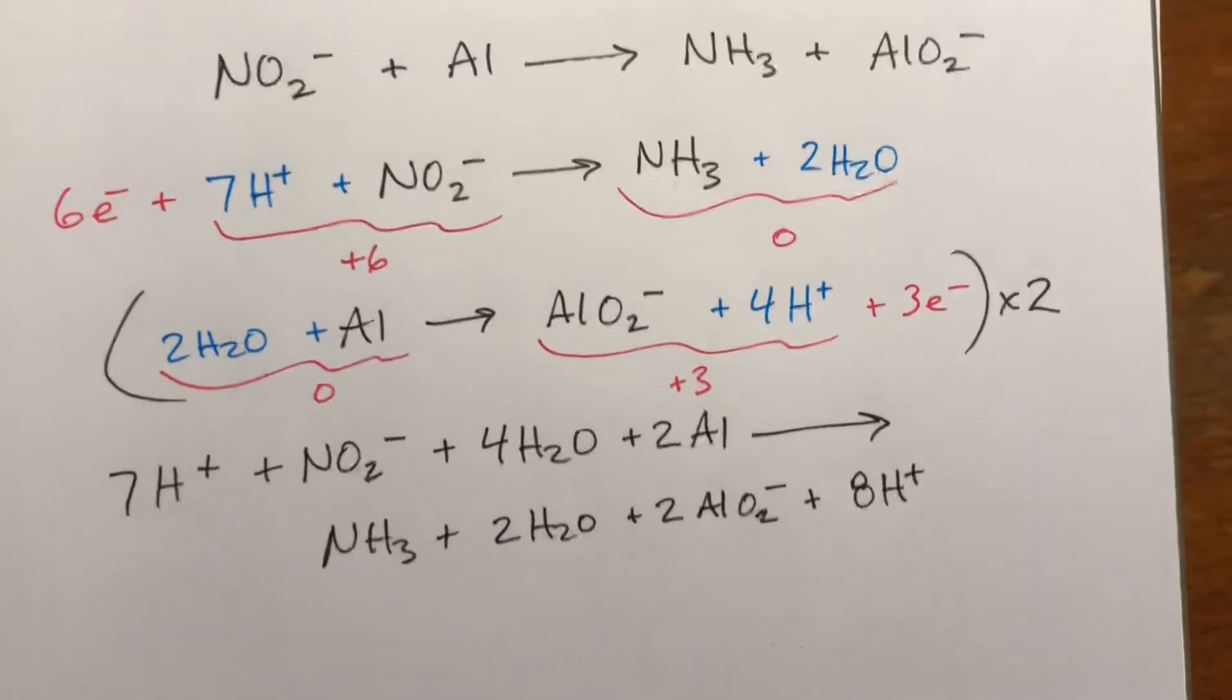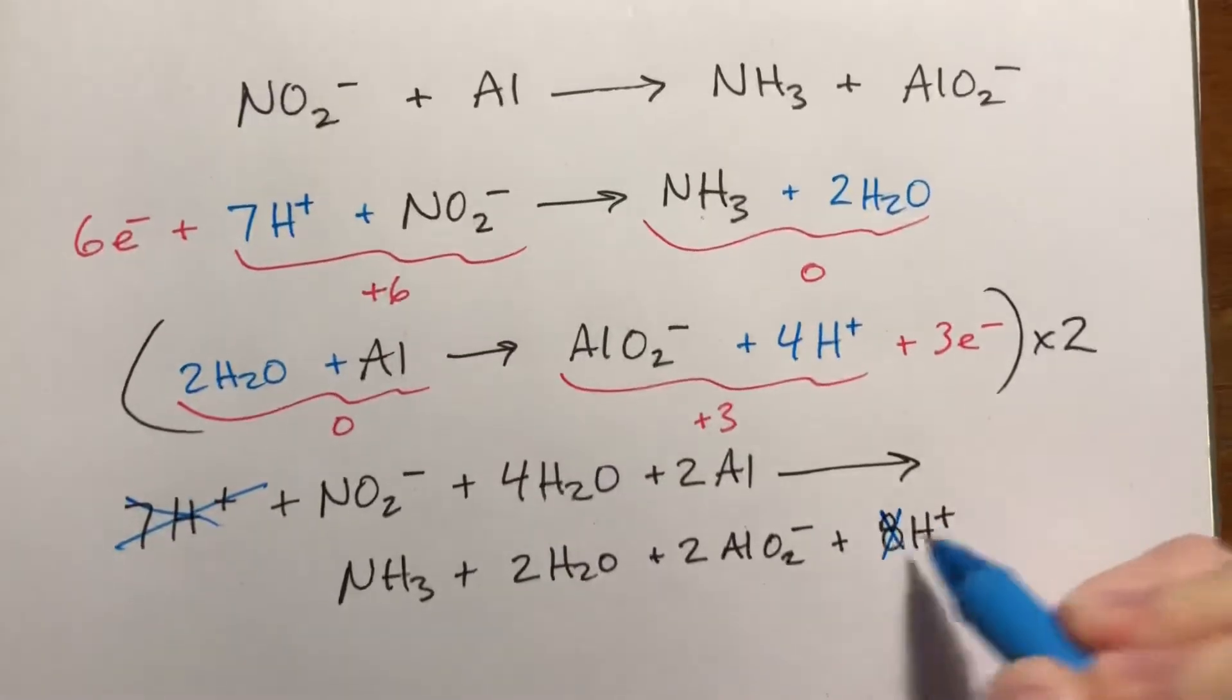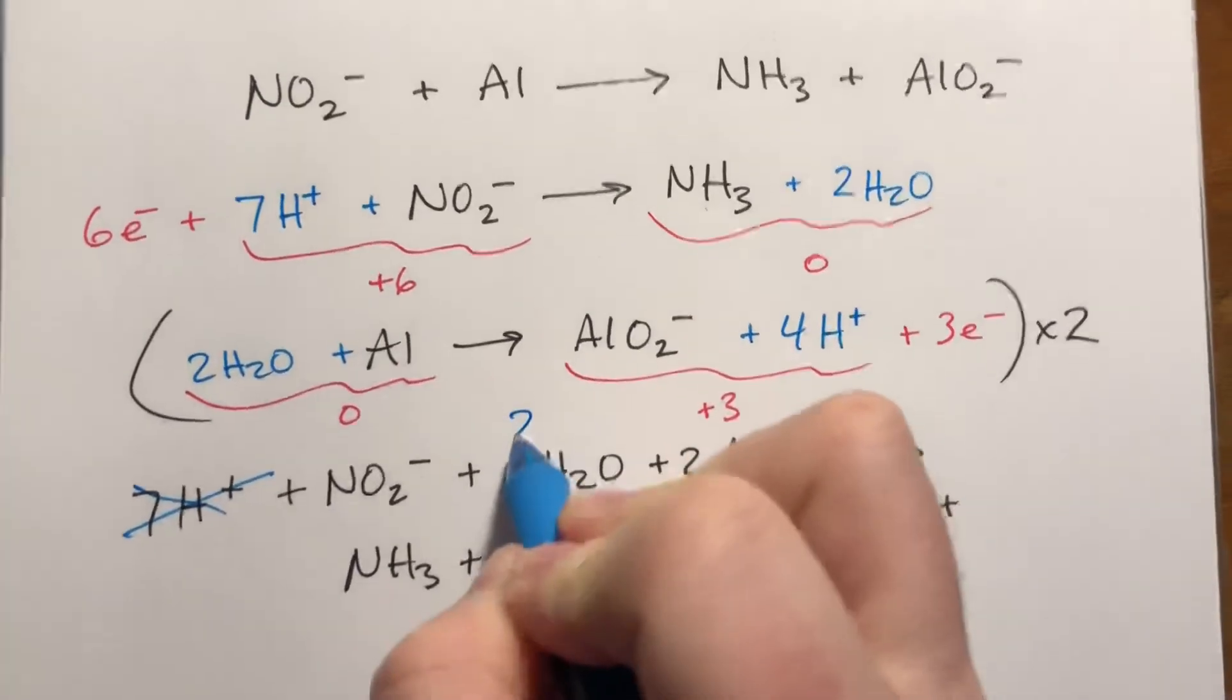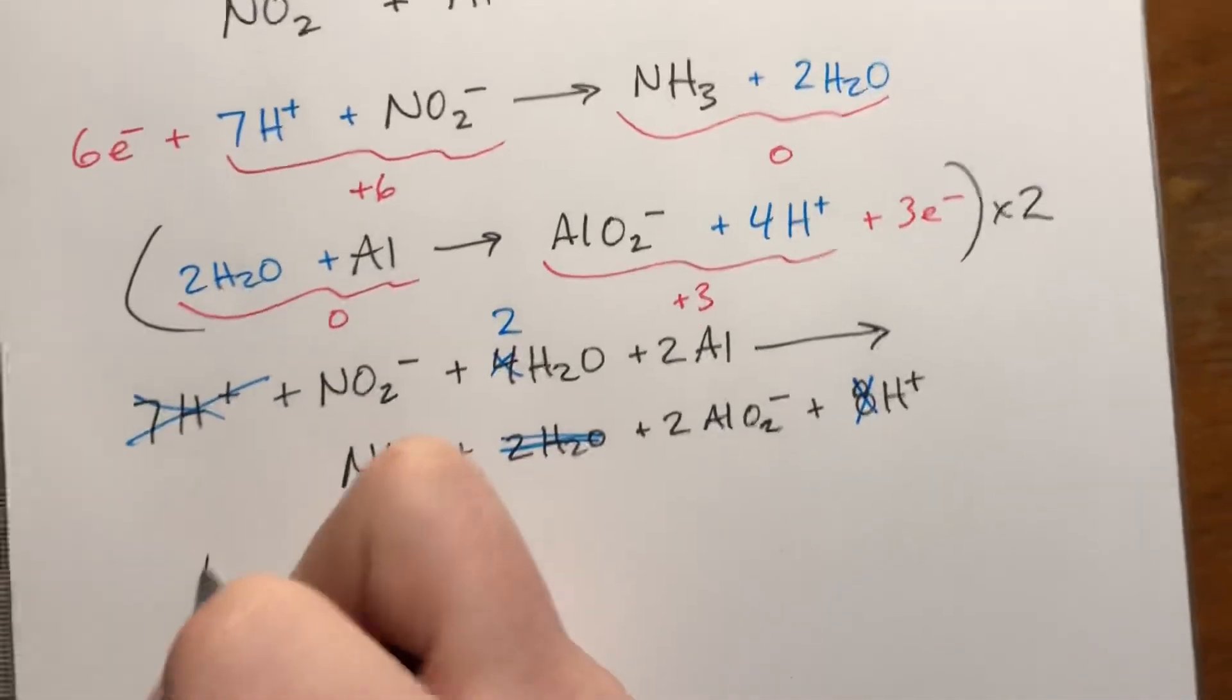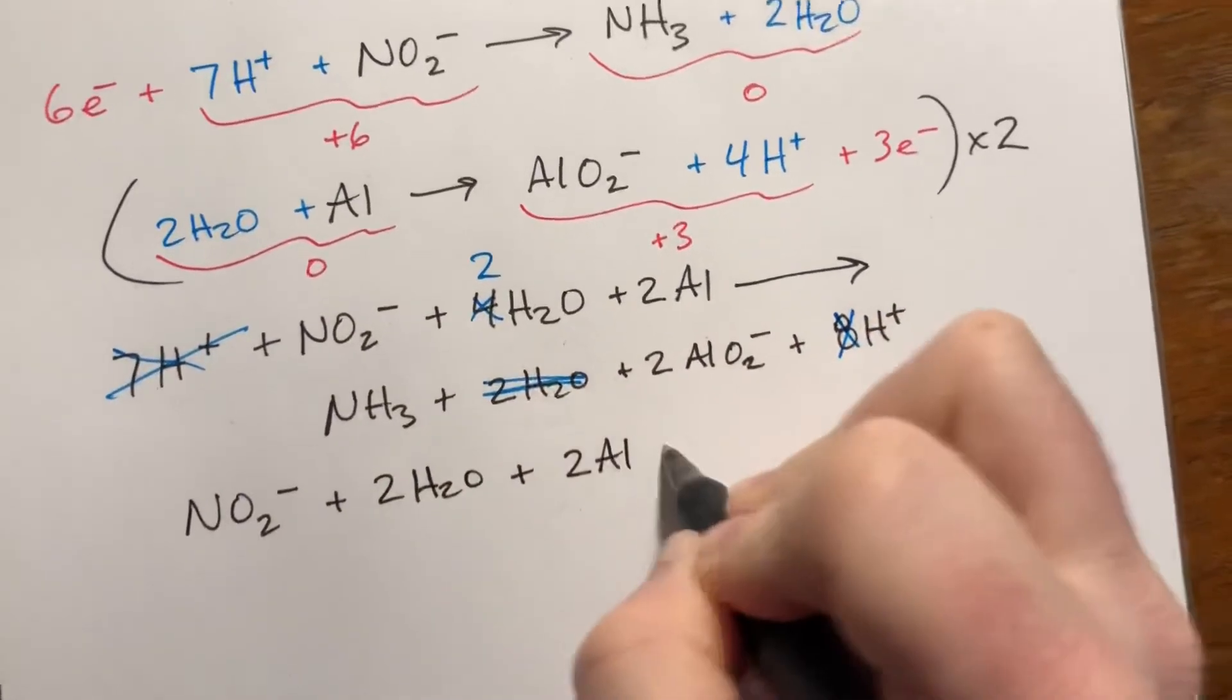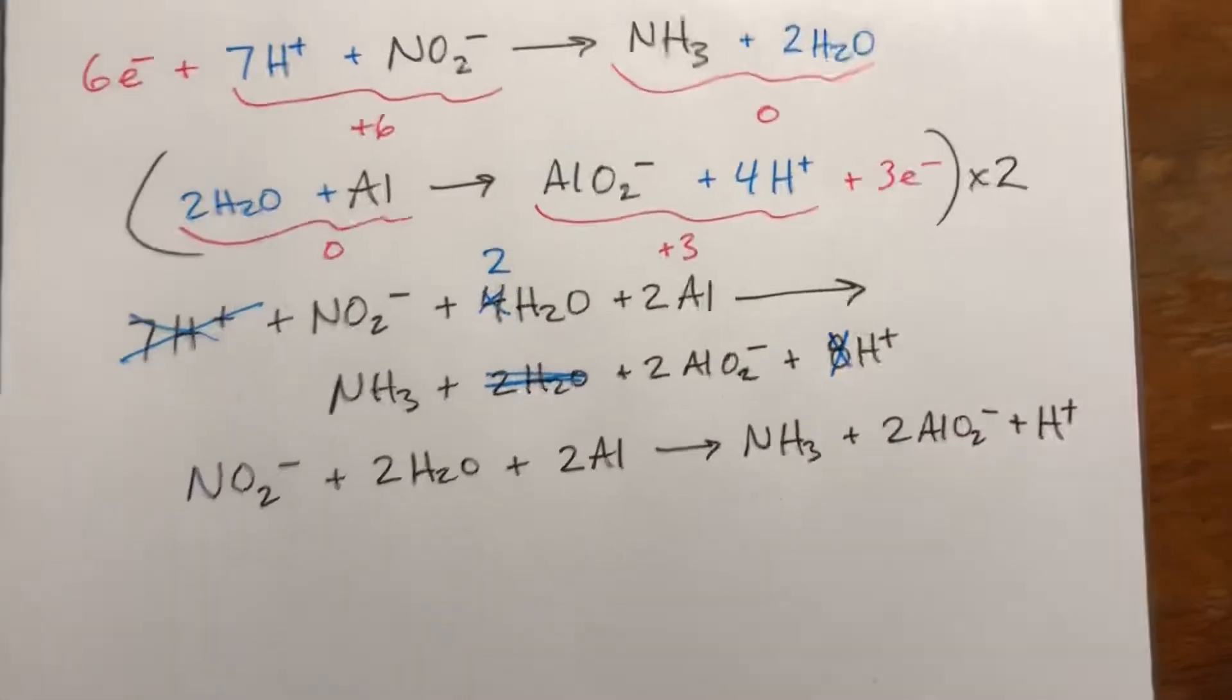Okay, now we're gonna cancel out everything that we possibly can, anything that's the same on both sides. Okay, we have seven H pluses here, we have eight here, so basically all but one are gonna cancel out. We have four waters here and two waters here, so these two will cancel out, and this will just become a two. If this was acidic conditions, we would just rewrite it all and be done. So NO2 minus, plus two waters, plus two aluminums, forms NH3, plus two AlO2 minus, plus H plus.